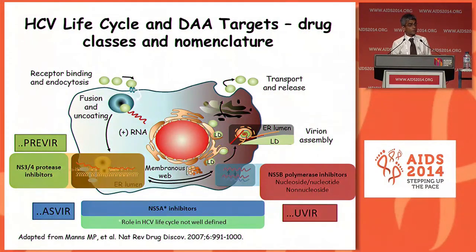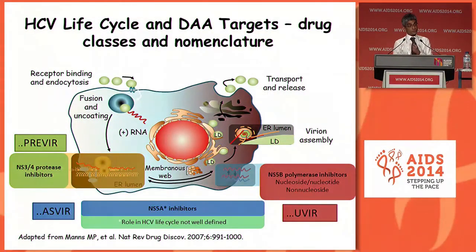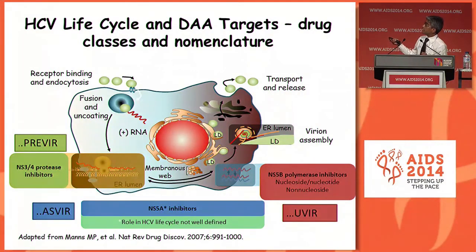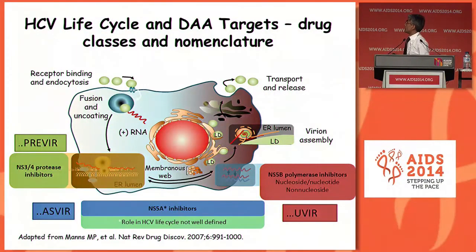This brings us to directly acting antiviral therapies. If you're going to take any slide away from this talk, this is probably the most important one — the groups of drugs that are coming through and their nomenclature. There are broadly three groups of DAAs: the protease inhibitors, the NS5A inhibitors, and the polymerase inhibitors, of which there are two classes, the nukes and the non-nukes. The labeling convention is '-previr' for protease inhibitors, '-asvir' for NS5A inhibitors, and '-uvir' for polymerase inhibitors.